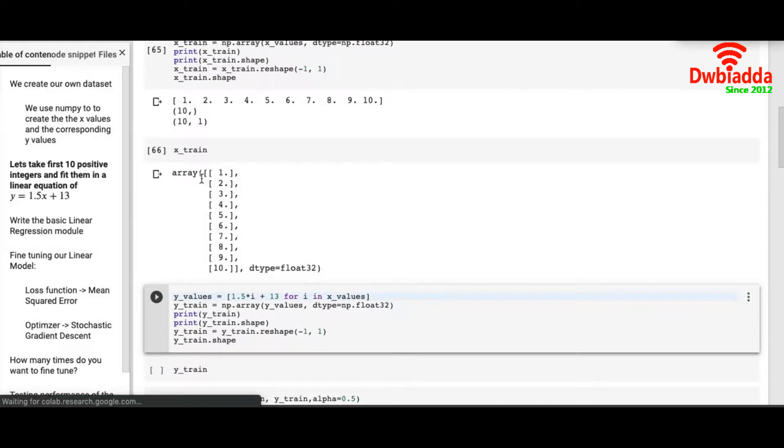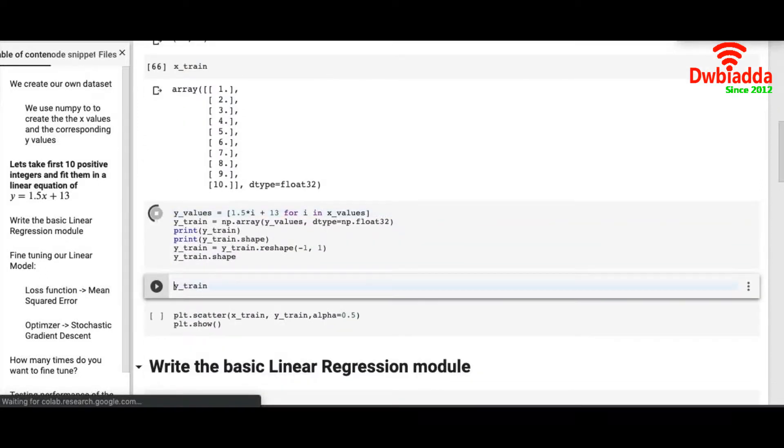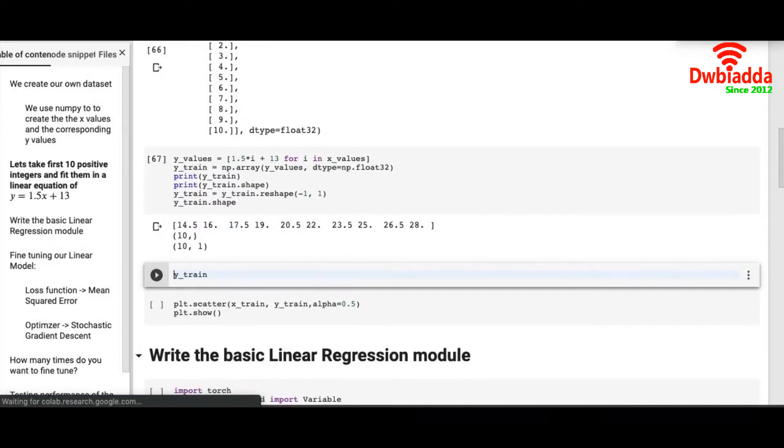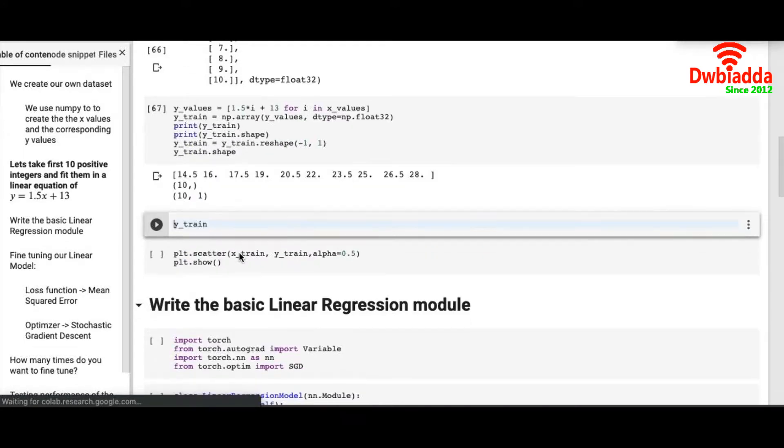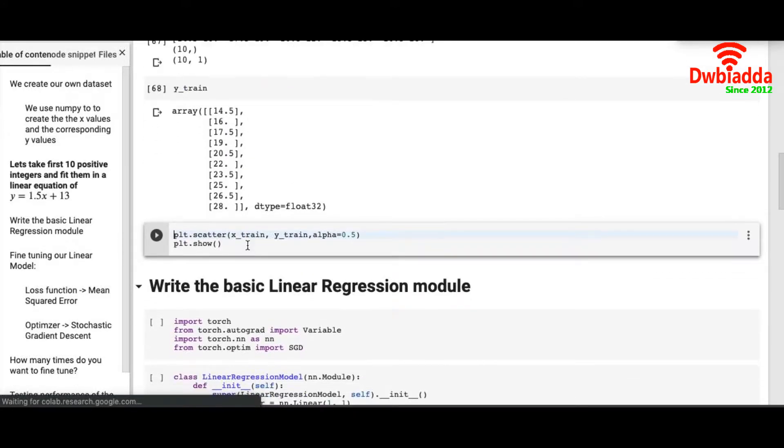As you can see, it's an array of small arrays that has only one element 1 to 10. We will do the same thing for Y train and the values will look like this.